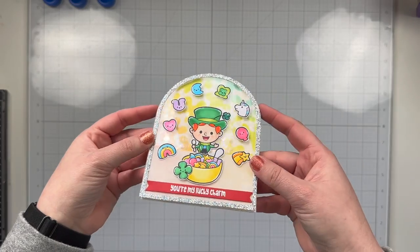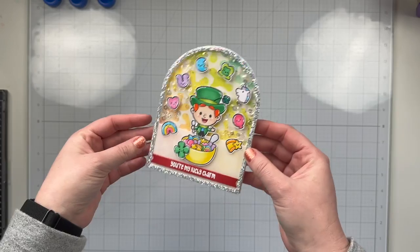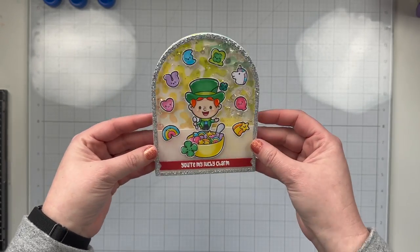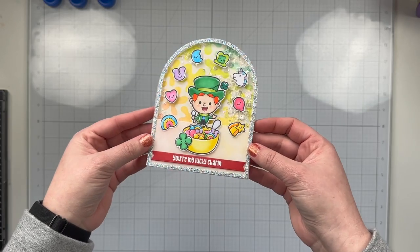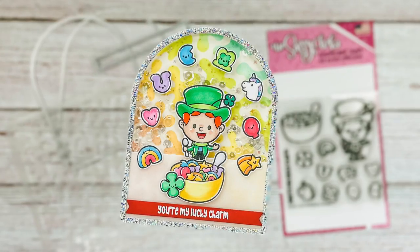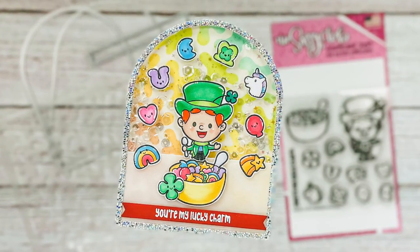So here's how my cute little shaker card turned out. I like that it has the clear sequins and it hides really well behind that vellum so it's kind of a surprise when you shake it and see all those pretty sequins come up. Again they have a very beautiful iridescent shine to them and it also allows that rainbow background to really still stand out on the card.